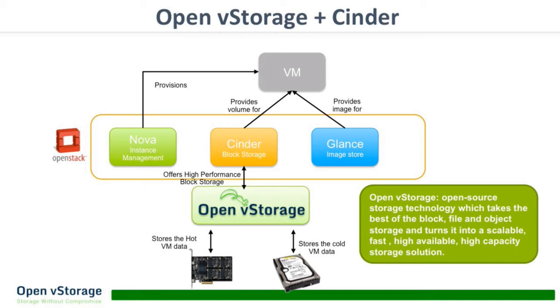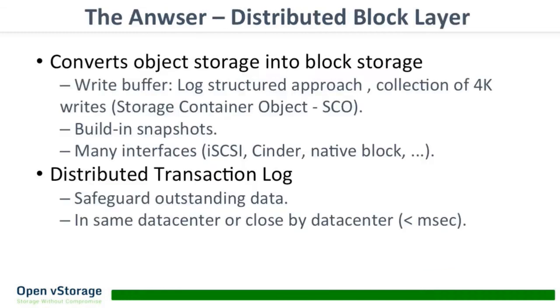We're pragmatic storage guys — if it doesn't exist, we build it. So what we did is we took Cinder and built OpenVStorage, which is an open source storage technology, underneath Cinder. It uses PCI flash cards for performance and stores cold data on traditional spinning disks. It's an open source project, so it also fits the TCO requirement — that's a nice benefit.